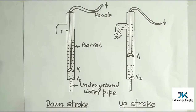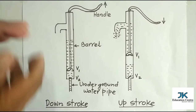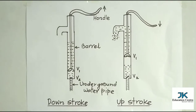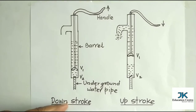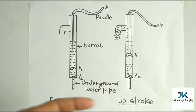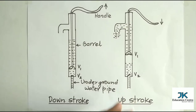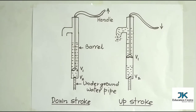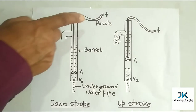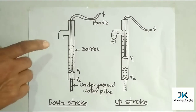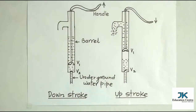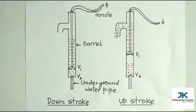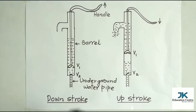If you are told how a water pump works, you have to explain the working with two diagrams. Sometimes the question may ask specifically about down stroke or up stroke. What is down stroke? When the handle of the water pump is pulled upward, the piston moves downward — this is called the down stroke. What is up stroke? When the handle is pushed downward, the piston moves upward — this is called the up stroke.